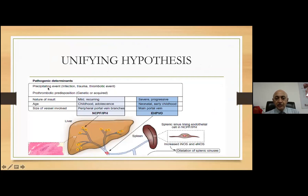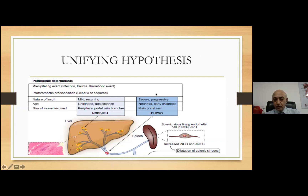There is a precipitating event like infection, trauma, or a thrombotic event in a patient who is predisposed genetically — either because of prothrombotic predisposition or genetically acquired prothrombotic predisposition. Two types of problems can occur: a severe problem occurring at birth, progressive, mainly involving the portal vein — that is extra-hepatic portal vein obstruction — or a mild recurring problem presenting in late childhood or early adolescence as portal hypertension without blockage of the portal vein, that is NCPF. The basic difference is rapidity of onset, acuteness of the problem, and involvement of major veins versus small and medium branches within the portal vein, with the intact portal vein which is dilated in NCPF.